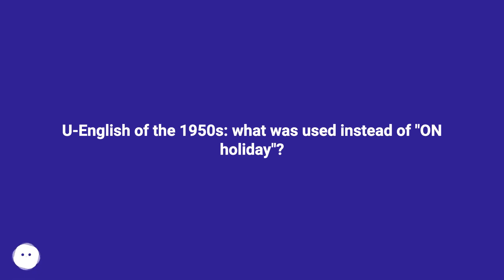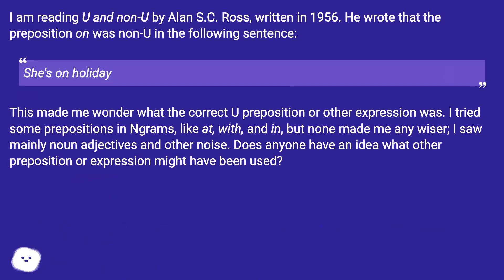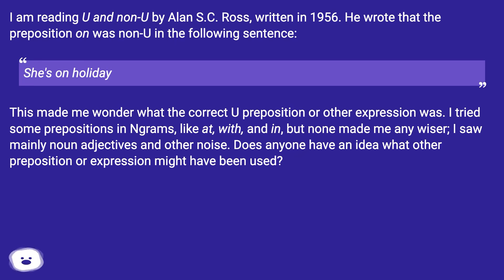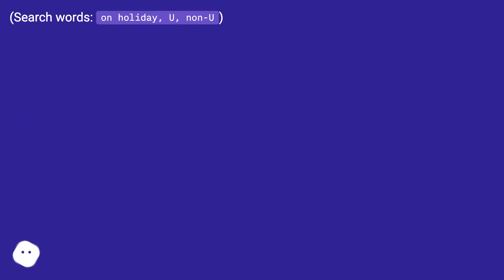In English of the 1950s, what was used instead of 'on holiday'? I am reading 'U and Non-U' by Alan S.C. Ross, written in 1956. He wrote that the preposition 'on' was non-U in the sentence 'she's on holiday.' This made me wonder what the correct U preposition or other expression was. I tried some prepositions in Ngrams — like 'at,' 'with,' and 'in' — but none made me any wiser. Does anyone have an idea what other preposition or expression might have been used? Search words: on holiday, U, non-U.